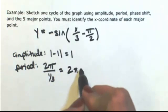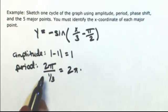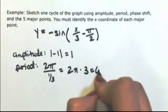Or we can rewrite this as multiplication of the reciprocal, so dividing by 1 third is the same as multiplying by 3, so this will be 6 pi.